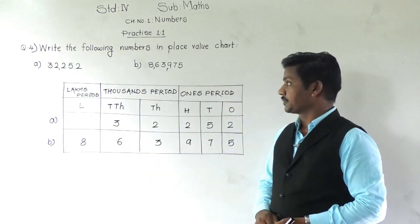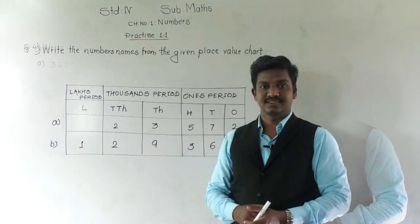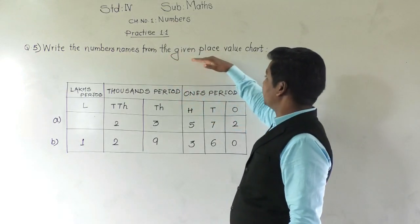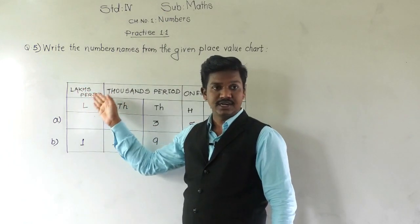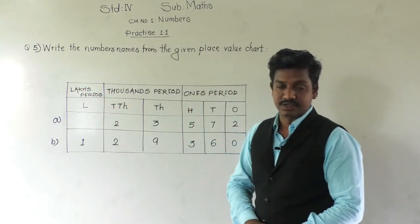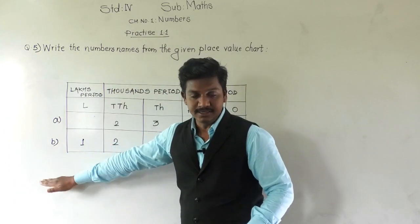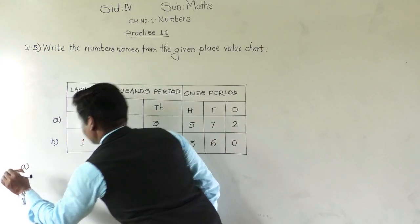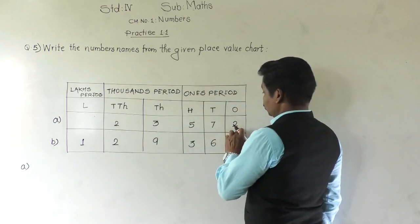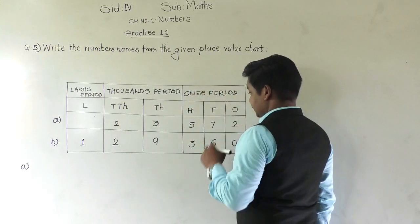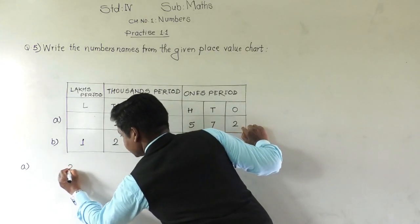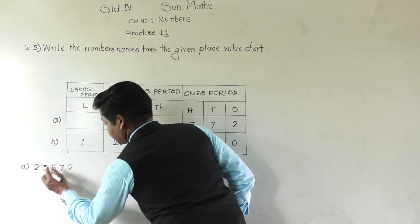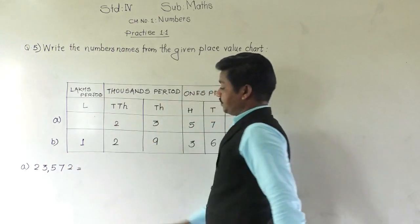Write this in your notebook. Now question five: write the number names from the given place value chart. Two numbers are given in the place value chart; we have to identify the numerals and write their number names. For the first number: ones is 2, tens is 7, hundreds is 5, thousands is 3, ten thousands is 2 — so the numeral is 23,572.